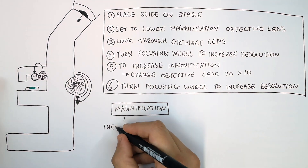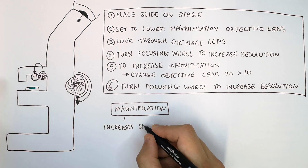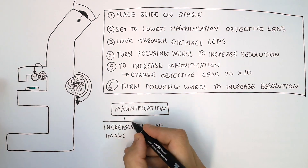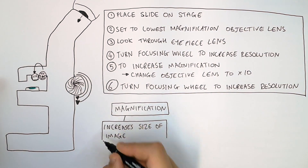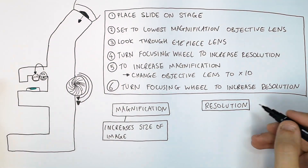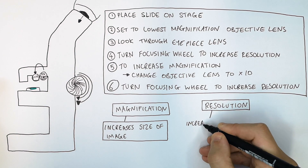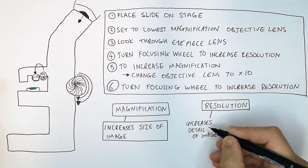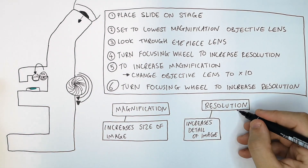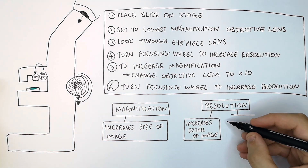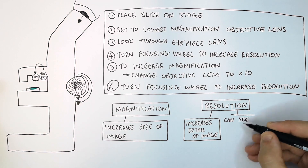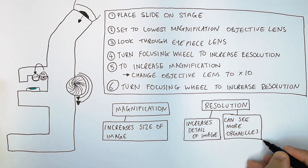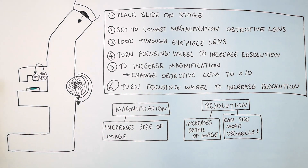Magnification is increasing the size of the image that you see, whereas resolution is increasing the detail of the image. When you increase resolution, you can see more detail and more organelles.